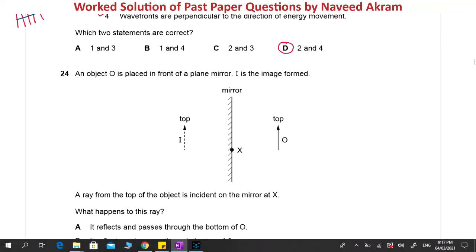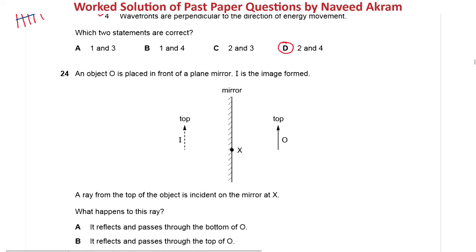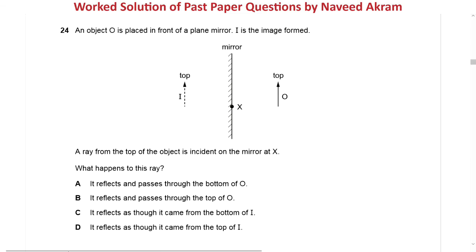The next question is question 24 from October/November 2019 Paper 1 Variant 2. An object is placed in front of a plane mirror. I is the image formed. A ray from the top of the object is incident on the mirror at X. What happens to this ray? Please pause the video and try to answer.